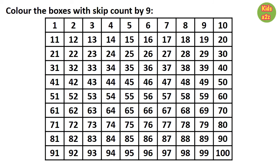This worksheet is also the same — here they need to skip count by number nine and need to color the boxes. Like, at first they need to color box number nine, then eighteen, then twenty-seven, and so on. That's all for now. Thanks for watching Kids A to Z.